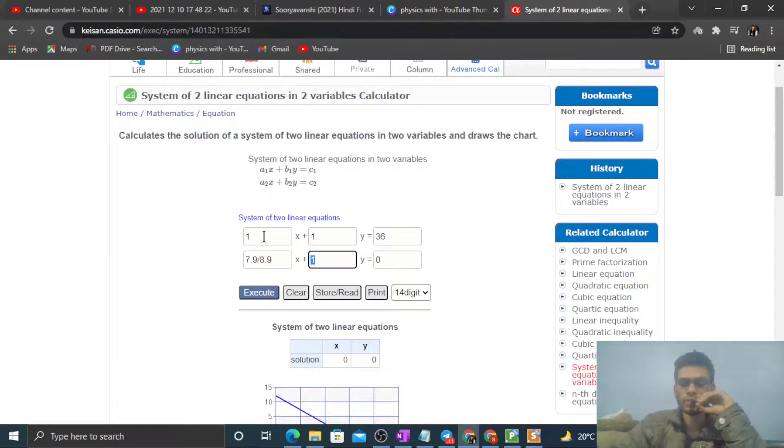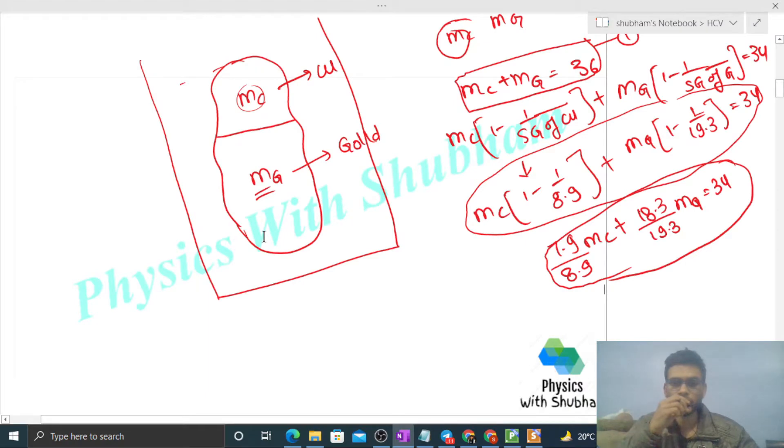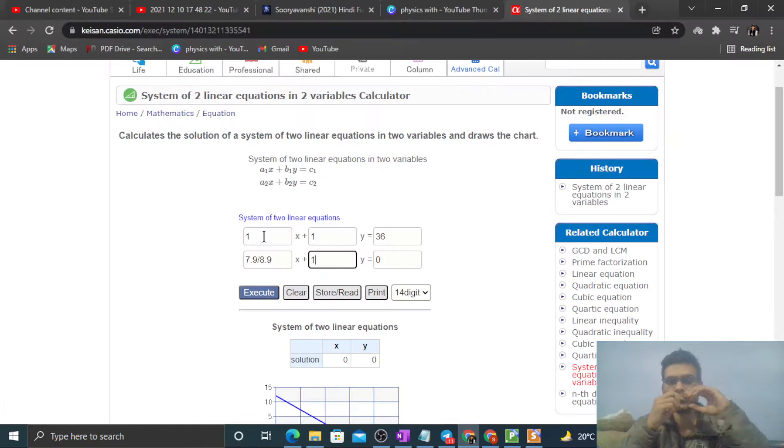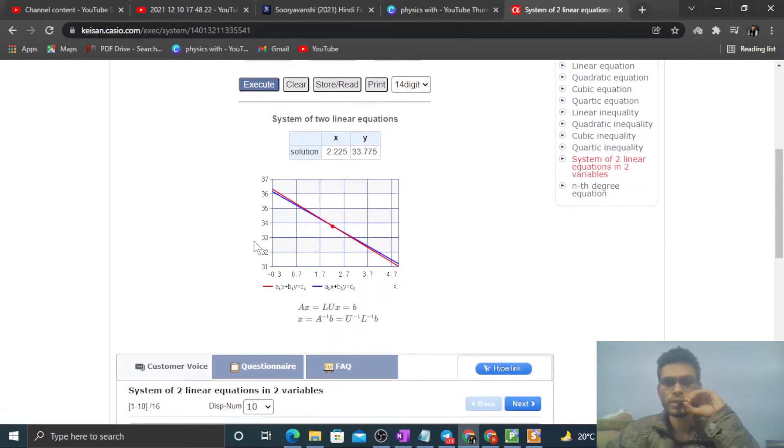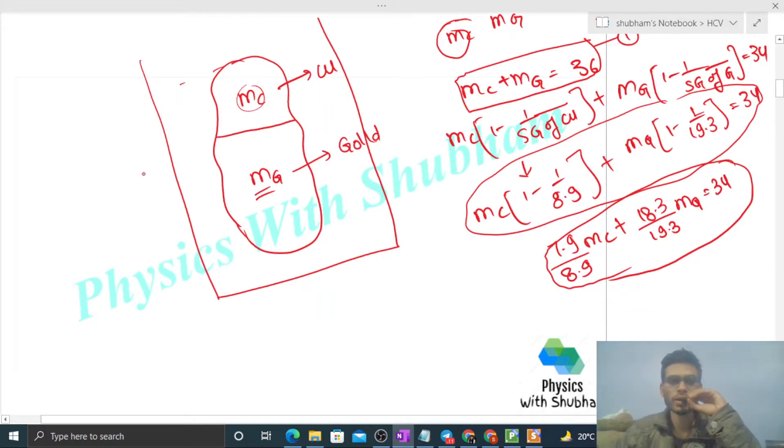And here it will be 18.3 by 19.3. That is given as 34. So let's calculate it. You'll get the graph and the values as well. The value of x is 2.225, so this is the mass of copper: 2.225 grams.